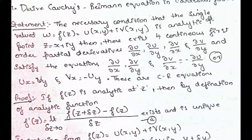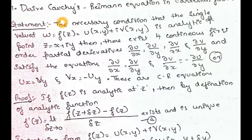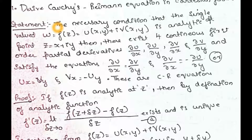We derive Cauchy's Riemann equation in Cartesian form. We can also define the CR equation in Cartesian form as a theorem. As a theorem, we have to prove that the CR equation satisfies the Cartesian form.